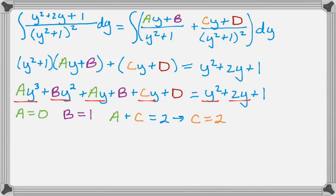And then similarly, on the left-hand side, the constant term is B plus D, and on the right it's 1, but since I knew that B was 1, that must mean that D is equal to 0. So now I know A, B, C, and D.